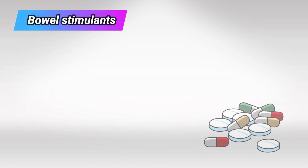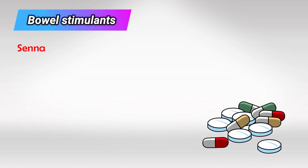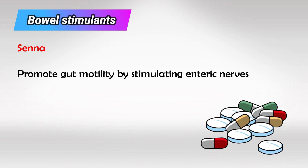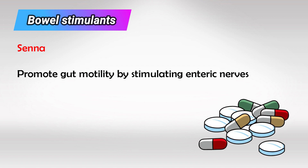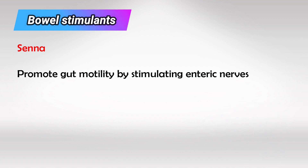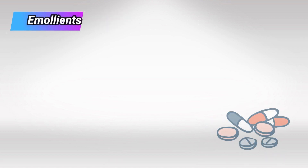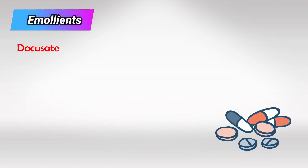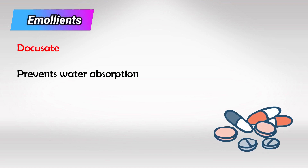Next are the bowel stimulants like Senna. These mainly stimulate the enteric nerves in the GI system and promote the motility of the GI. Next are emollients like docusate, and these also prevent the water from escaping the lumen.